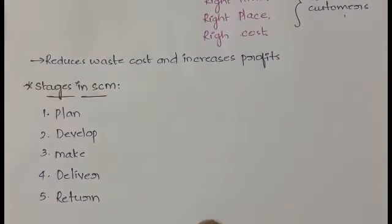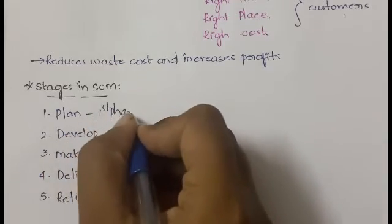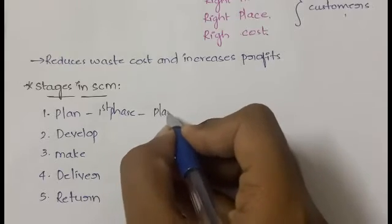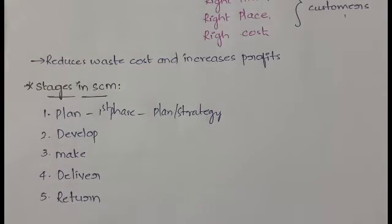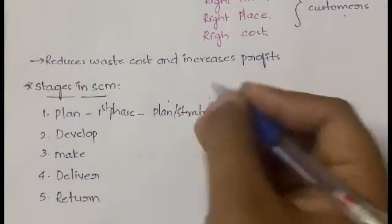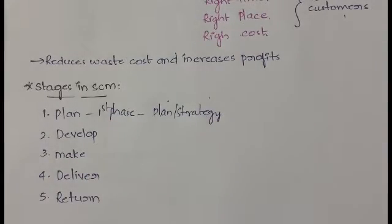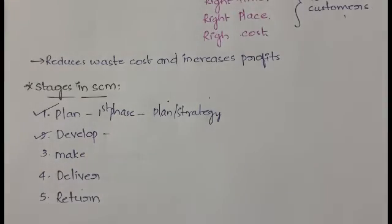The first stage is Plan. It is the first phase in supply chain management. Here, a plan, strategy, or methodology is developed that states how the good being produced will meet the need of the customer. So you decide what product you are providing and how it will meet the customer's requirement. A plan or strategy is developed about how the customer requirement is met.